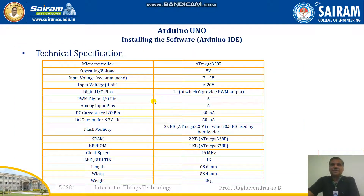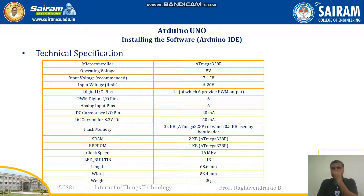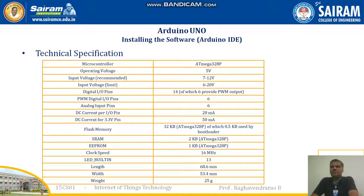Now let us look at the technical specifications of this Arduino board. There is a microcontroller, operating voltage, recommended input voltage, and a maximum input voltage limit. There are digital I/O pins, and among those, six are PWM pins. There are also six analog input pins. The current per I/O pin is a maximum of 40 milliamps.